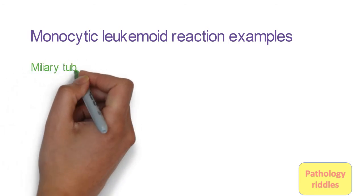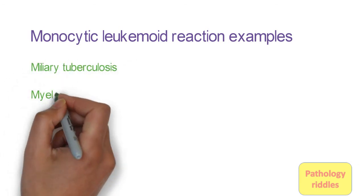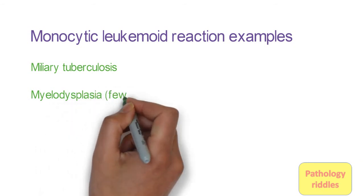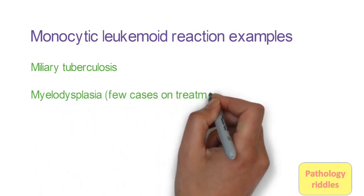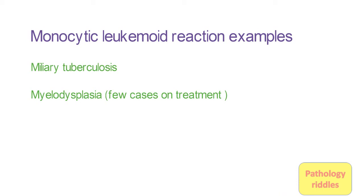So coming to the useful tip, whenever there is a leukemoid reaction case in your department, do study all the cells, all these precursors. Check out images in your textbooks, in the atlas, as well as on the authentic sites on the internet. This will help you to identify the precursors in the bone marrow and bone marrow counting becomes easy as a postgraduate.